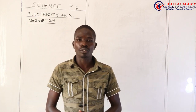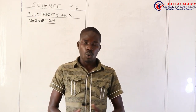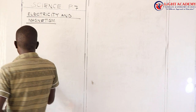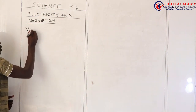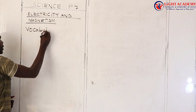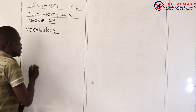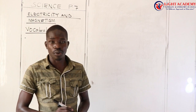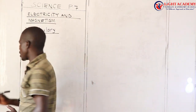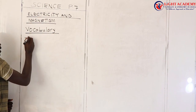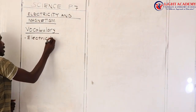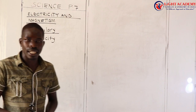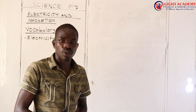In this topic, which new words are we going to find? We call them the new words, or we call them the vocabulary. The new vocabulary we're going to find — let us look at the vocabulary, which means the new words we are going to meet in this topic. The first new word is called electricity — the form of energy that is produced by the flow of electrons.